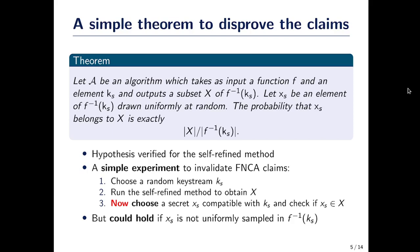The self-refine method verifies the hypothesis of this theorem — mostly; I'm going back to that just a bit later. But the self-refine method does verify this hypothesis, so the probabilities given in the previous slide should be false. There is no way that they're right.